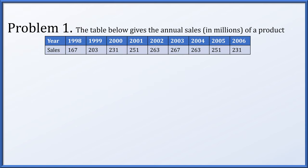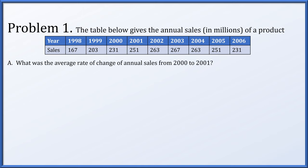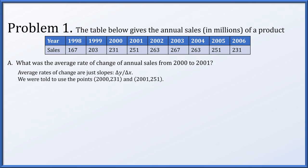In problem one, we have a table that gives the annual sales in millions of a product. First we want to determine the average rate of change of annual sales from 2000 to 2001. The two points we need to use are for x equals 2000 to 2001, and the associated y values from the table are 231 and 251.